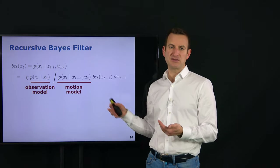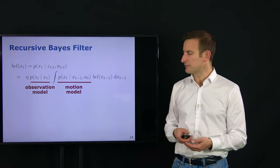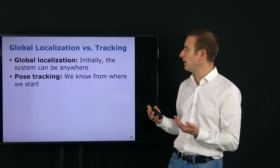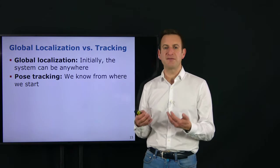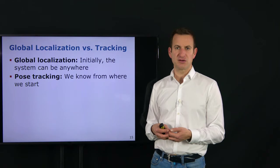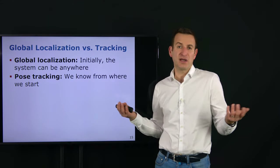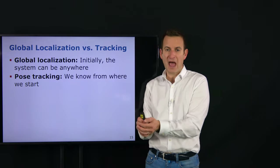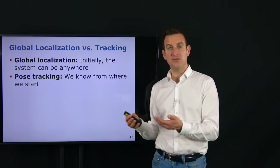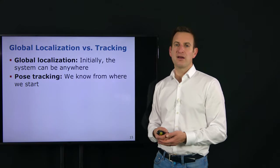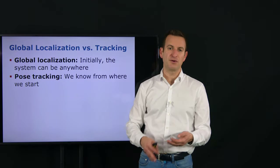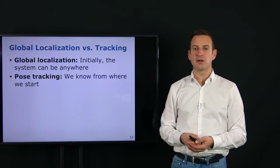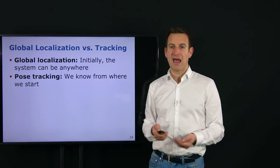Not all localization systems are based on the recursive Bayes filter, but several popular ones are. Another important distinction is global localization versus pose tracking. Global localization means we have no idea where we start — an unknown initial configuration — so we can be anywhere. Pose tracking means we typically start from a known position or have a fairly focused belief about where we are with small uncertainty, and we just want to estimate where the system is moving from that start location. Pose tracking is typically simpler than global localization because global localization has more ambiguities.